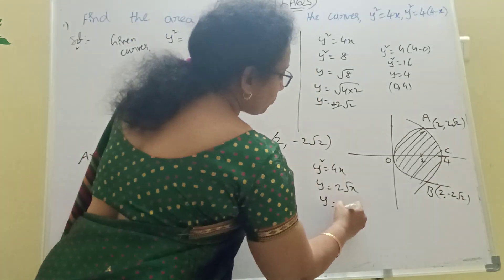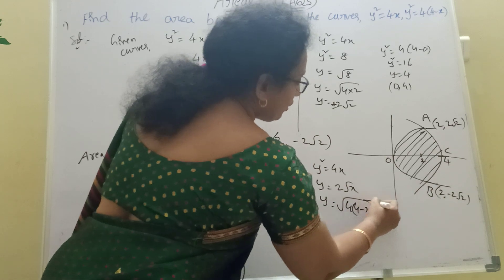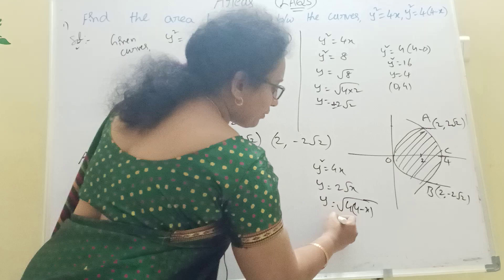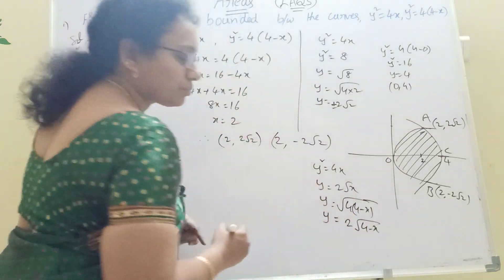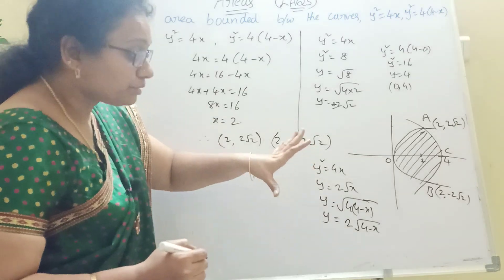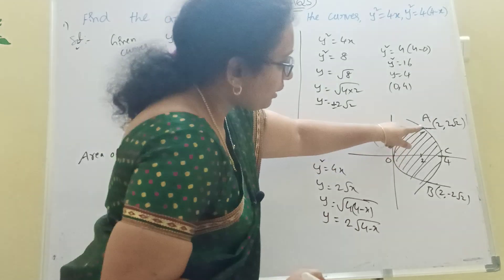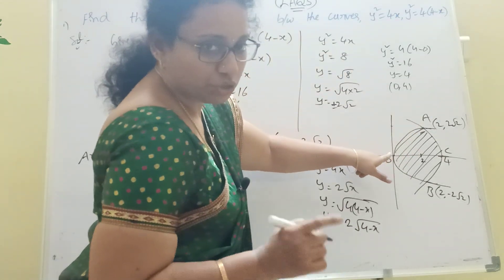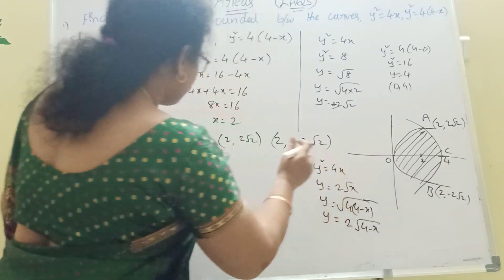The value of y from the first curve is y equal to 2 root x, and from the second curve y squared equal to 4(4 minus x), so y equal to 2 root of (4 minus x). We use these expressions to set up the integrals.